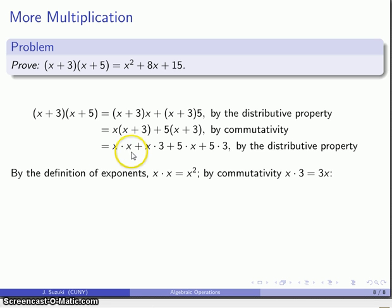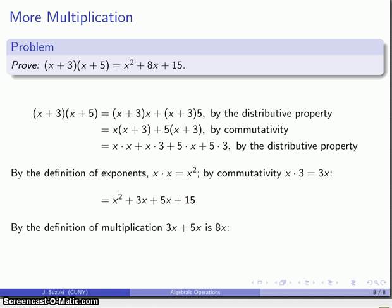By the definition of exponents, this x times x is x squared. By commutativity, 3 times x and x times 3 are the same. And now I can, by my definition of multiplication.